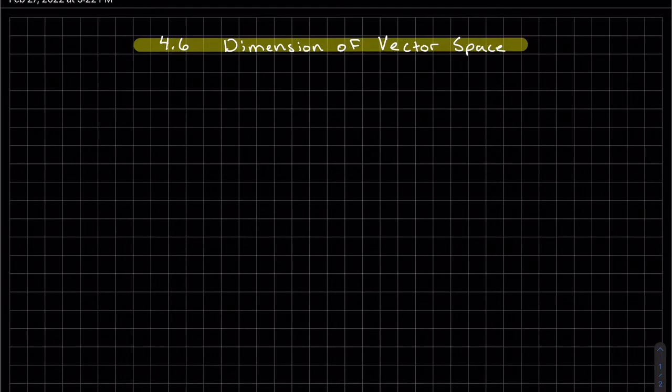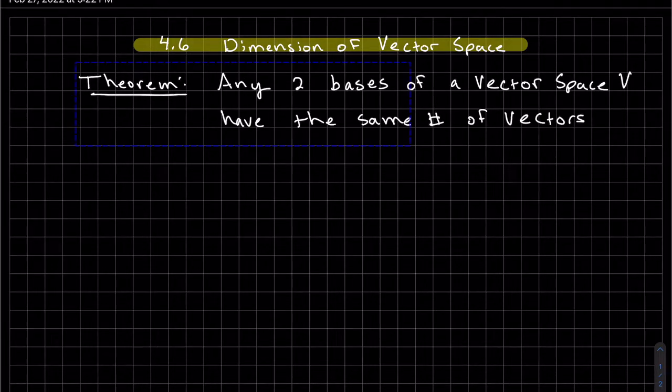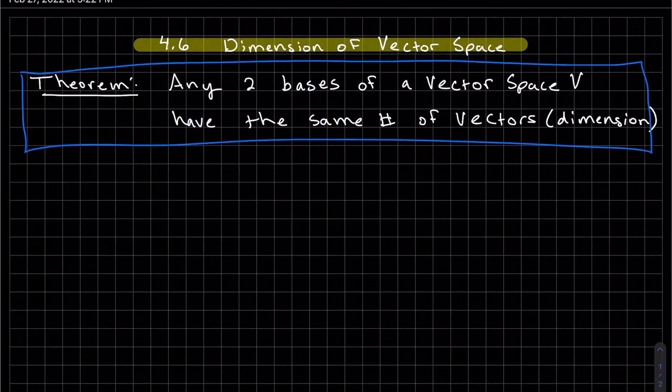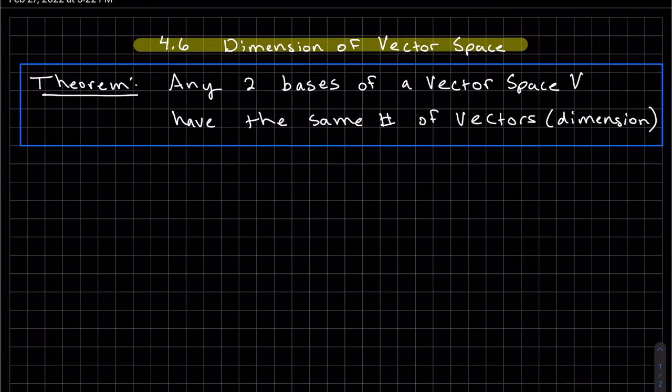So this is dimension of a vector space. We're going to start off with a theorem. Any two bases of a vector space must have the same number of vectors in it, and that's called the dimension, or just dim for short.